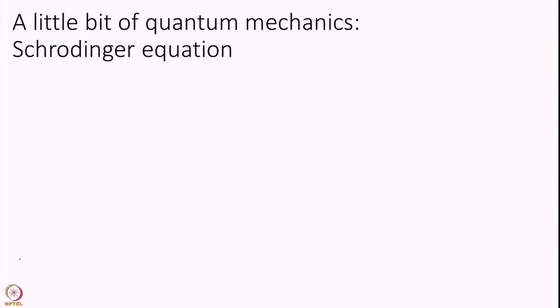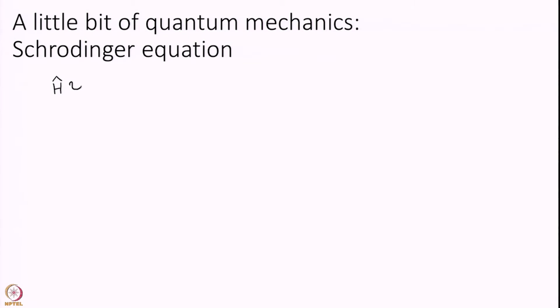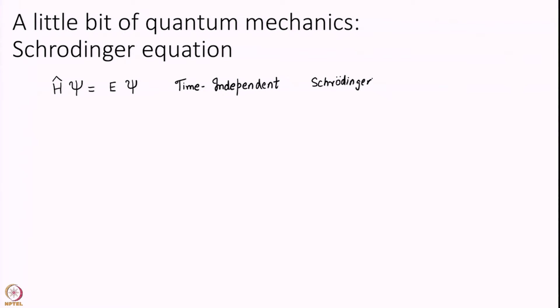Quantum mechanics essentially tells us that energies come in discrete, quantized levels. The equation I will be looking at today is H psi equal to E psi. This equation is called the time-independent Schrödinger equation.